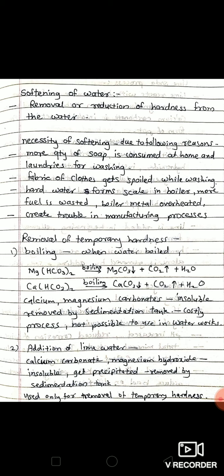Let's see the various methods for the removal of hardness. First, removal of temporary hardness: temporary hardness is removed by two methods, by boiling and by addition of lime water. Let's see what is boiling. When water is boiled having temporary hardness, the following chemical reactions take place.